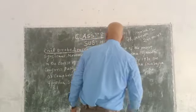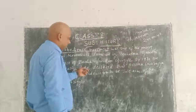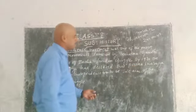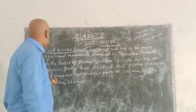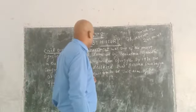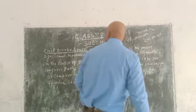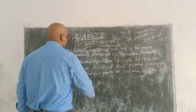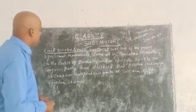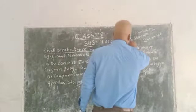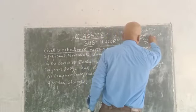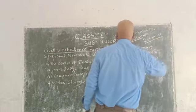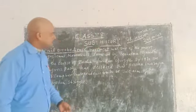By 1930, the Congress party had declared that complete independence was the goal. That's why Mahatma Gandhi started the Civil Disobedience Movement, which was followed by this. The march covered 241 miles from Sabarmati Ashram to the Arabian Sea, and as a result it was a landmark event in the freedom struggle.